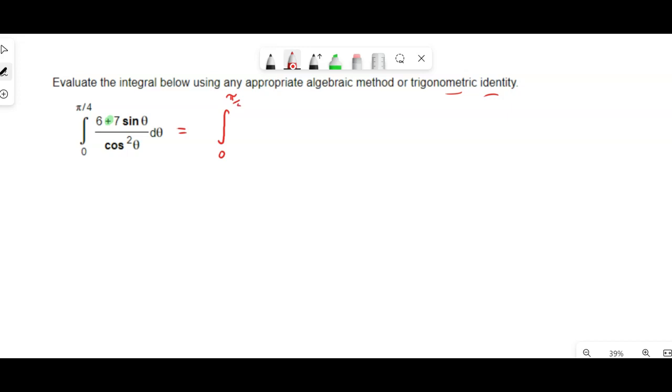So I want to do that here, and I'm going to break this apart into two intervals, one, six over the cosine squared of theta, and then the plus seven sine theta over the cosine squared.